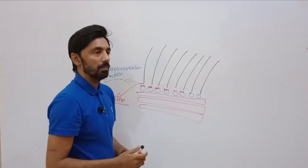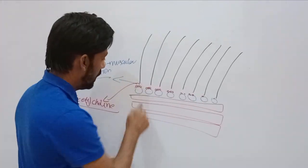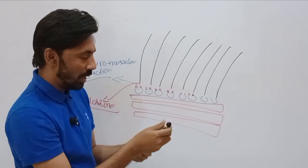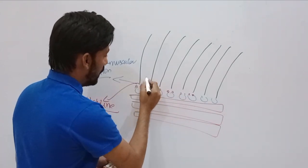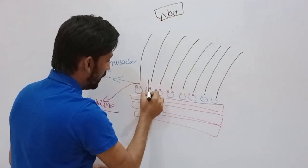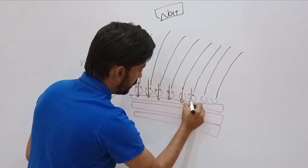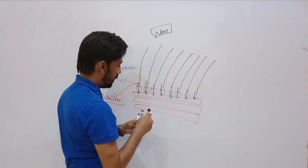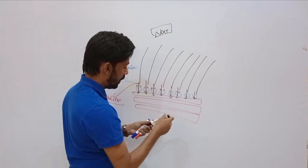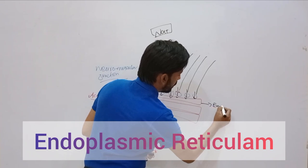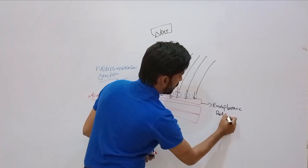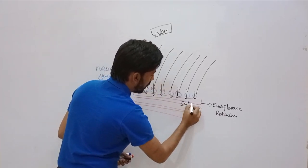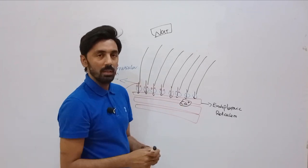When acetylcholine is released at the neuromuscular junction, it helps to open up the sodium-potassium gated channels. Then sodium ions with a positive charge move inside the muscle fibers — this is called the influx of sodium ions. Inside the muscle fibers there is cytosol and endoplasmic reticulum, and when the sodium ion influx occurs, calcium ions are released inside the muscle fibers.